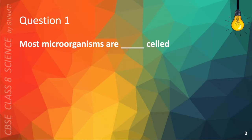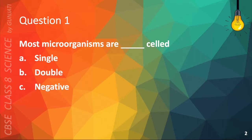Question 1. Most microorganisms are blank-celled. A. Single, B. Double, C. Negative, or D. Zero. The correct answer is A. Single.